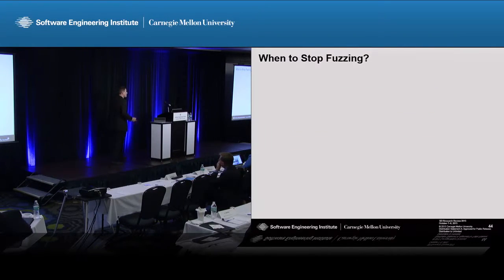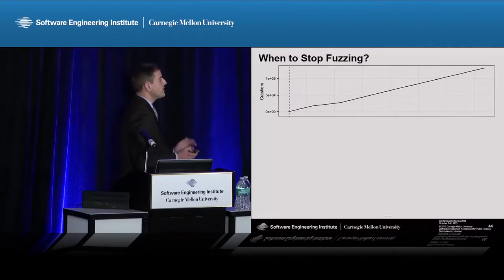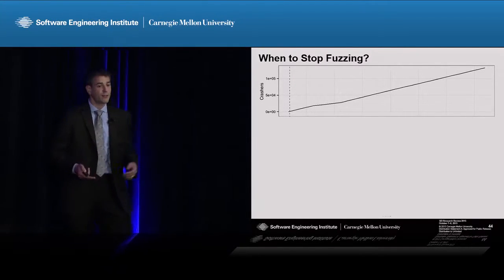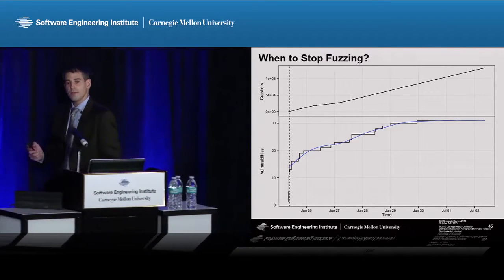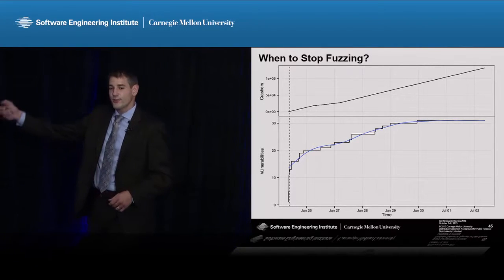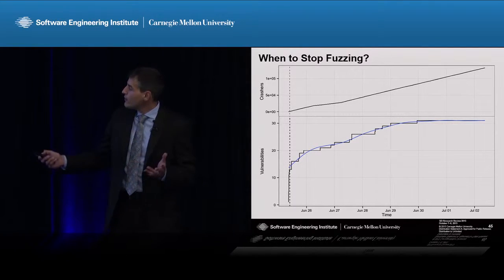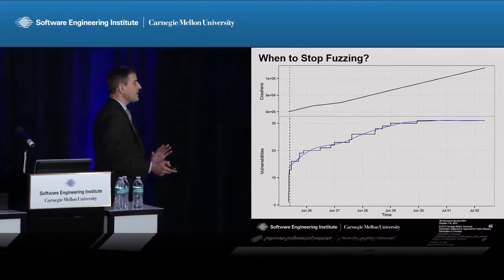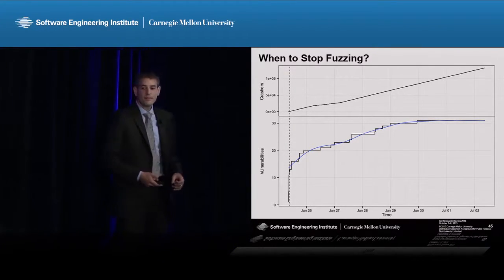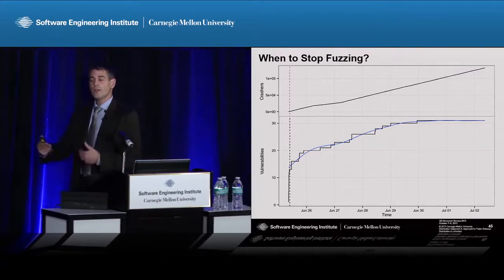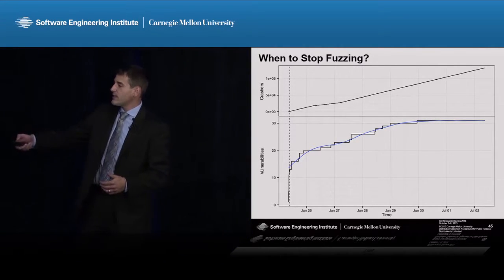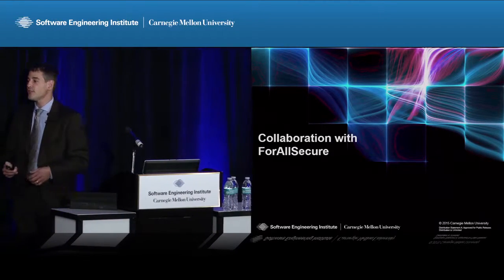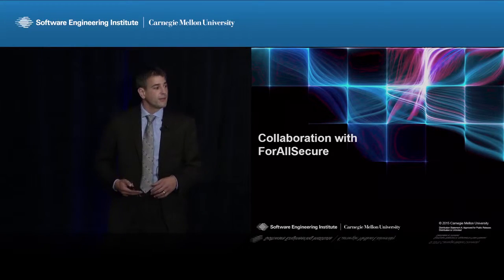Another problem we looked at was: how long do you fuzz? How do you know when you're done? One graph shows the number of crashes found over time in an experiment — a really straight line, telling us we're finding crashes at a steady rate. But a second graph shows how many vulnerabilities we find over time, and these two curves don't look anything alike. With the vulnerability curve, we find a whole lot at first — like 20 vulnerabilities in the first day — then we slow down, and in the last three days of the experiment, we don't find anything. Having this data helps a lot because when we're in the middle of a fuzzing run, we can look at how long it's been since we found the last new vulnerability and try to guess whether we're done or should keep fuzzing.